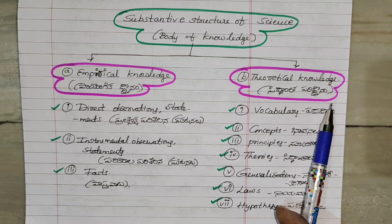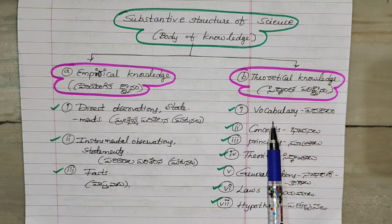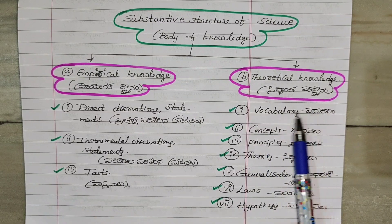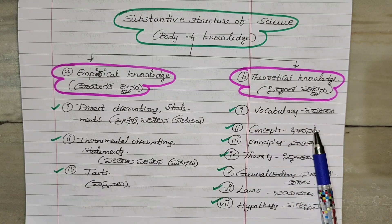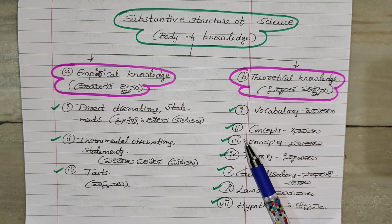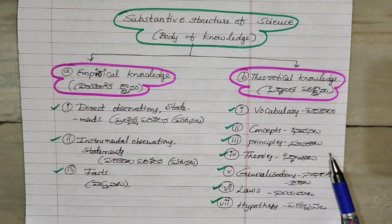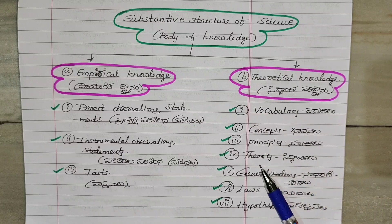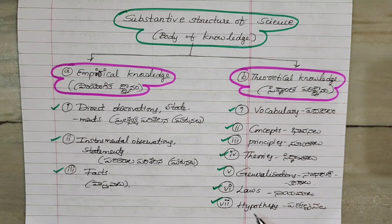The vocabulary of science includes theoretical knowledge: Concepts (Bhavan), Principles (Sutra), Theory (Siddhant), Generalization (Sadharnikaran), Laws (Niyama), and Hypothesis (Parikalpan).